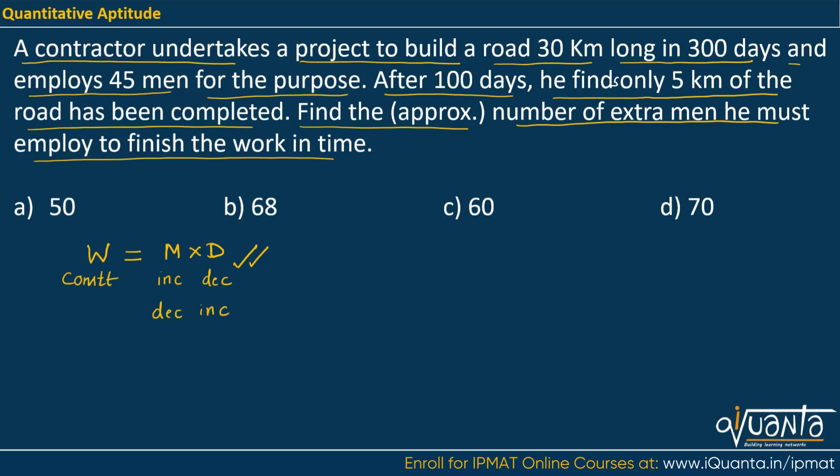So I can further rewrite this relation as M into D upon W and this would be equal to some constant say K. So here in the question, the only task is to build a road of 30 kilometer. So that means the work is same, we can further rewrite this relation as M1 D1 upon W1 equals to M2 D2 upon W2. Because if the work is same, then the ratio is always constant.